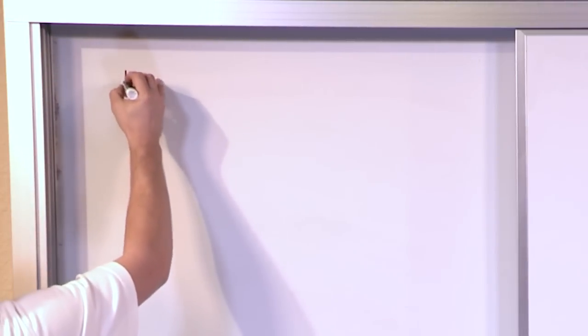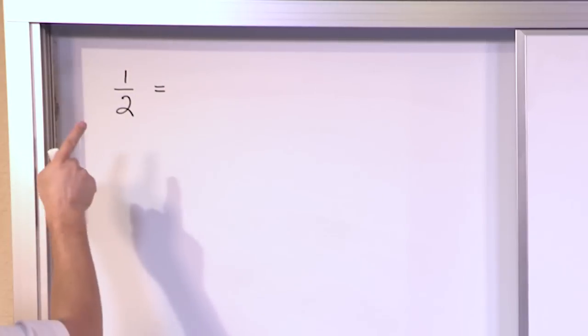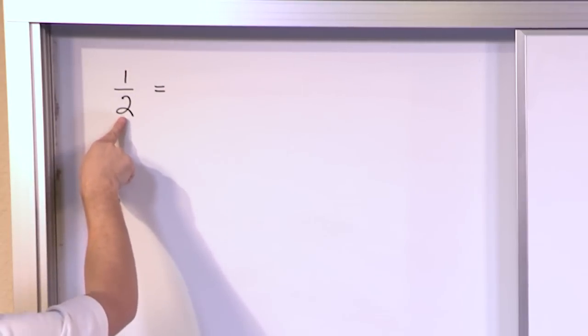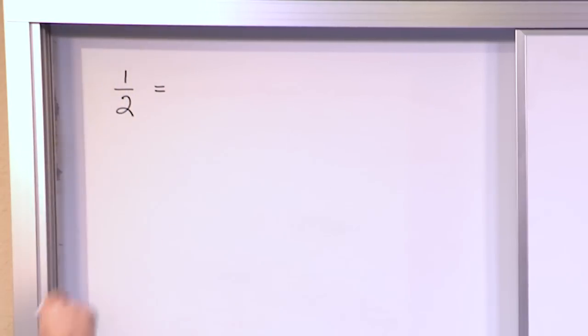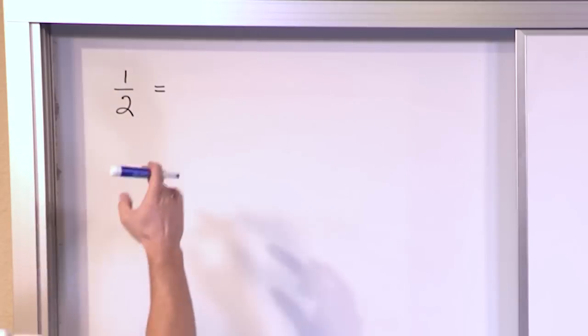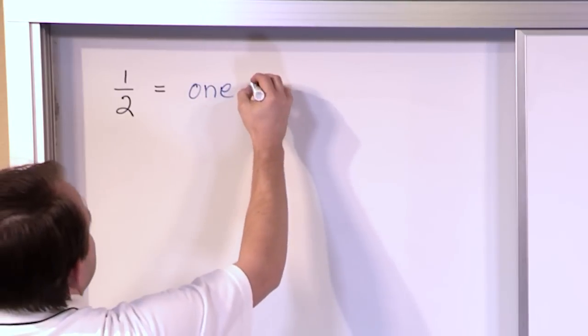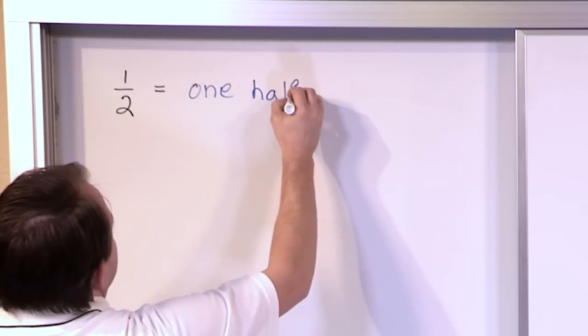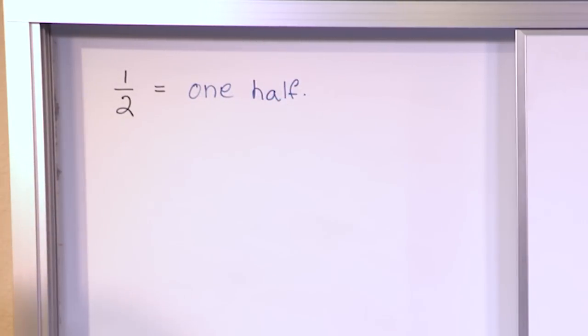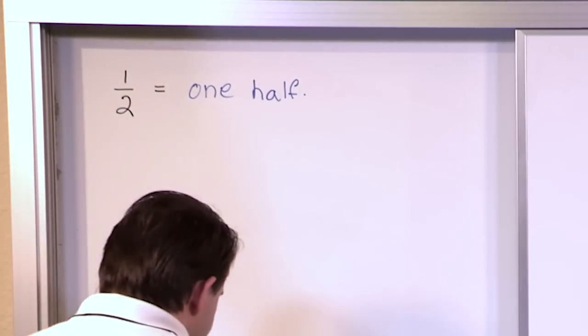What if you had the fraction one half? This is a fraction I know you've all seen and what it means is if you cut something into two pieces and you only take one of those pieces away, that represents one half. How do you write it down in terms of words? Well one half is written like this. One, the number one, and then half. So if you have one half of a gallon of milk or one half of a candy bar, that's the way that you would write that down.